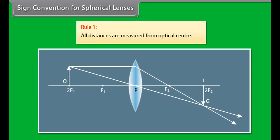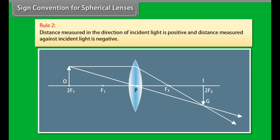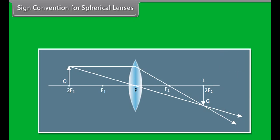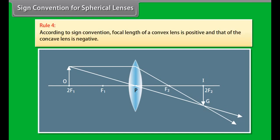Sign convention for spherical lenses: Rule 1 — All distances are measured from the optical center. Rule 2 — Distances in the direction of incident light are positive; distances against incident light are negative. Rule 3 — Distances above the principal axis are positive; distances below are negative. Rule 4 — The focal length of a convex lens is positive, and that of a concave lens is negative.